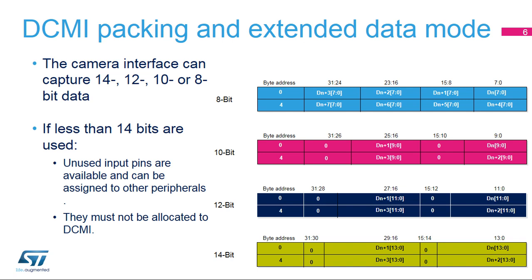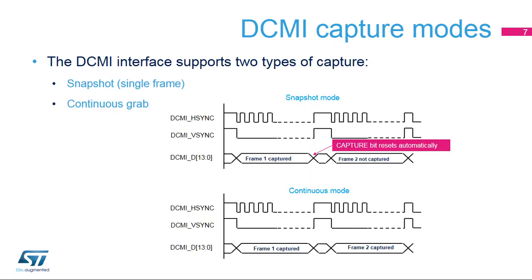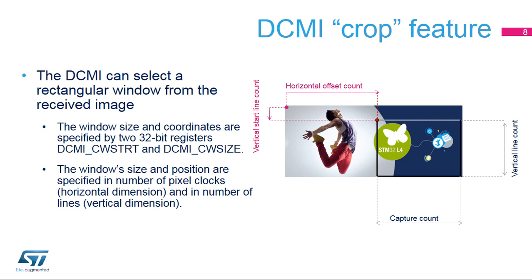An 8-level FIFO is used in order to accommodate for any DMA response latency without losing data. The camera interface allows you to capture a single frame synchronized after a software request, or to continuously receive the data flow. In capture mode, the capture is requested by setting the capture bit in software and starts with the beginning of the next incoming frame. The DCMI clears the capture bit when the single frame has been received.